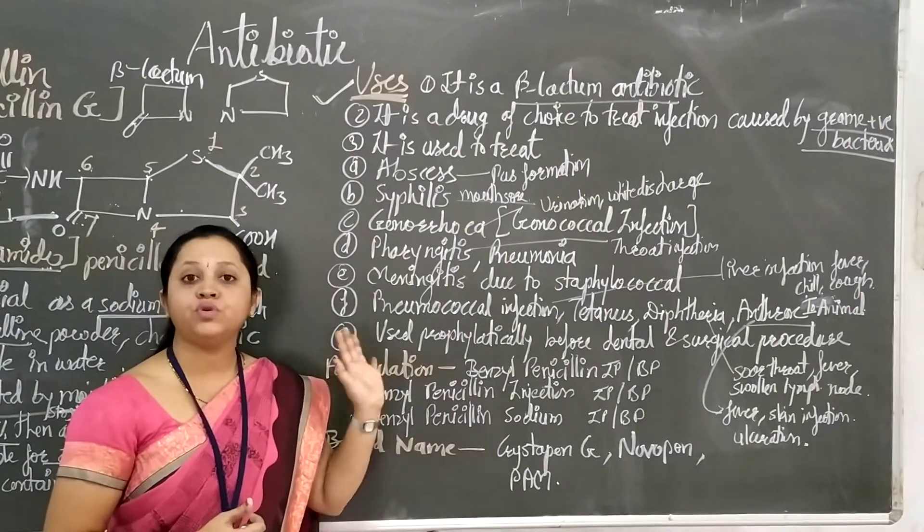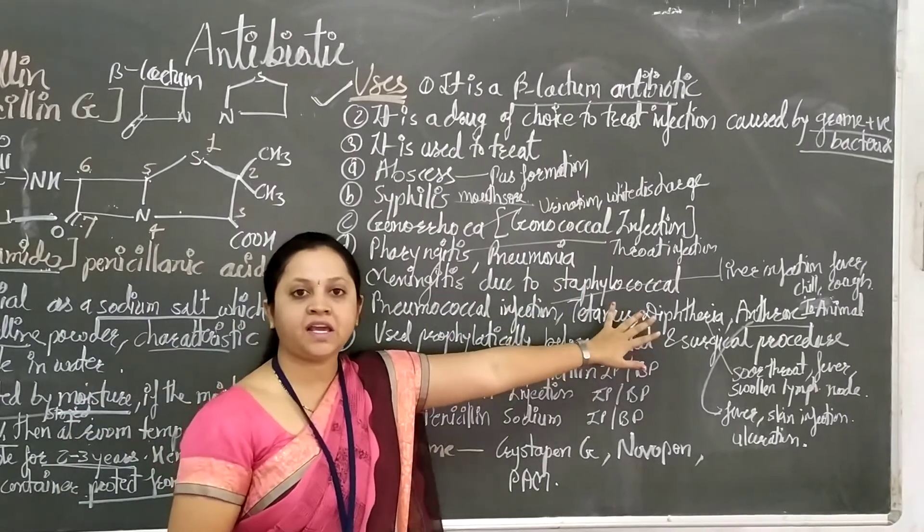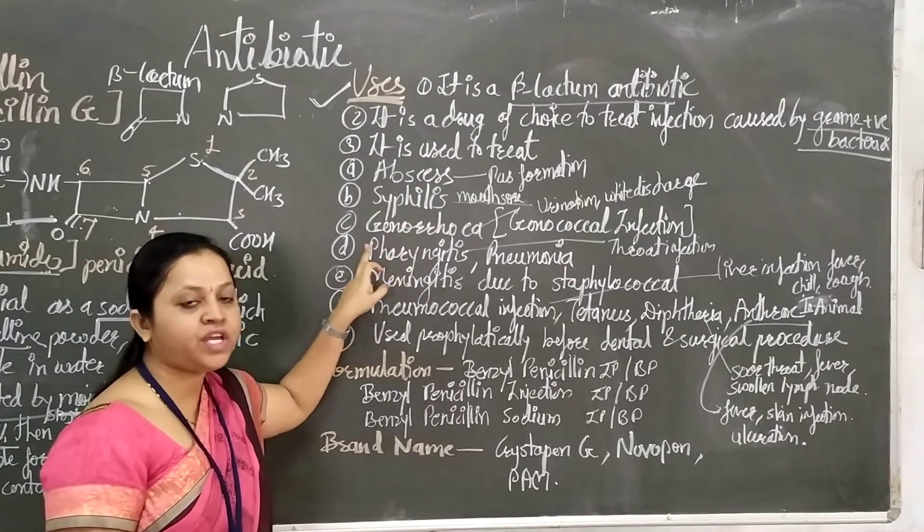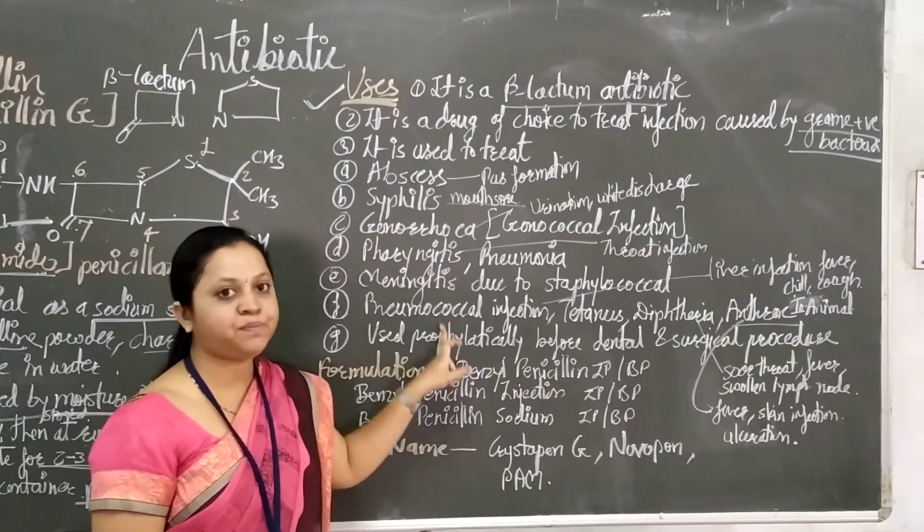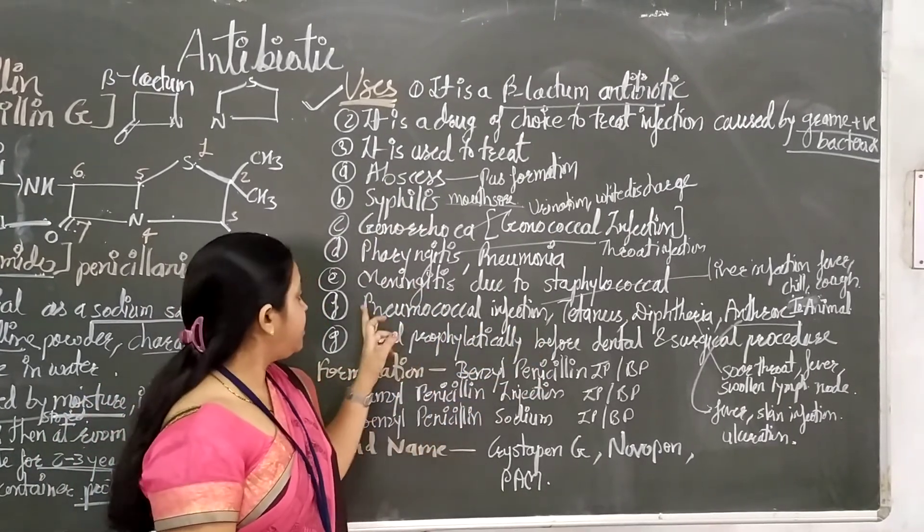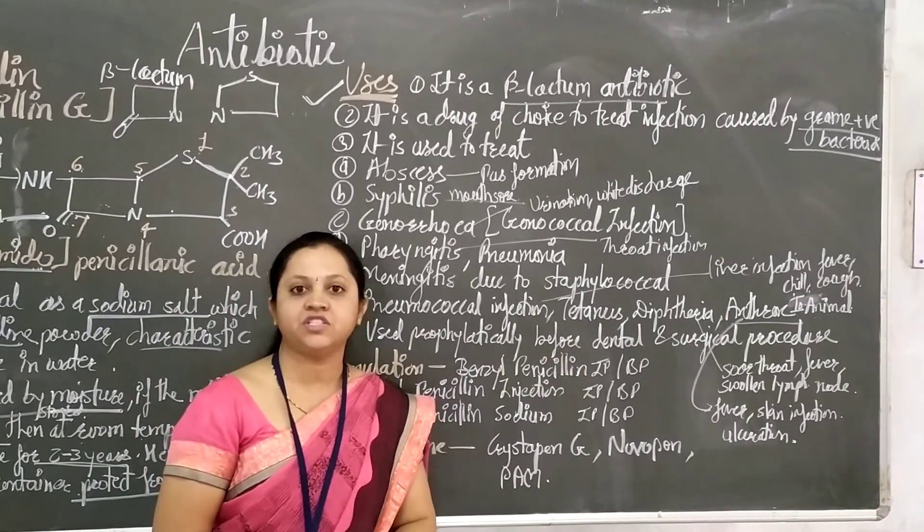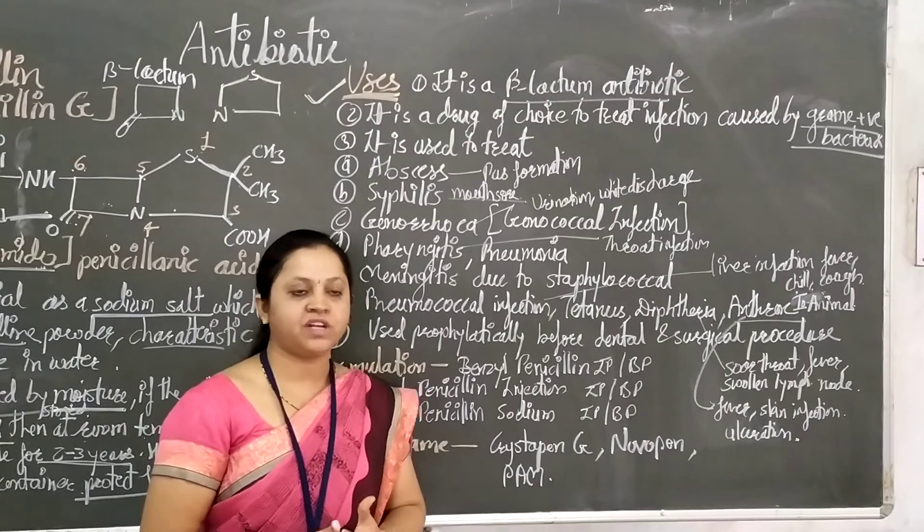In summary, the uses we have covered are: narrow-spectrum antibiotic for abscesses, septicemia, gonorrhea, gonococcal infections, pharyngitis, diphtheria, anthrax, meningitis, and prophylactic use for dental and surgical procedures. These are all the uses we have covered.